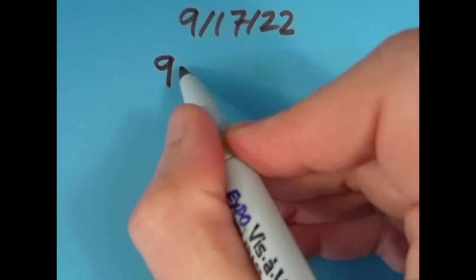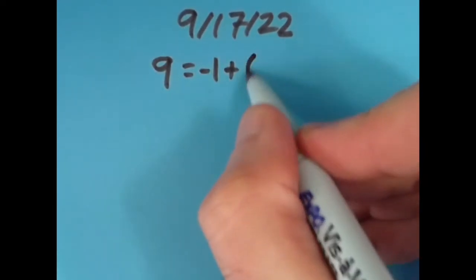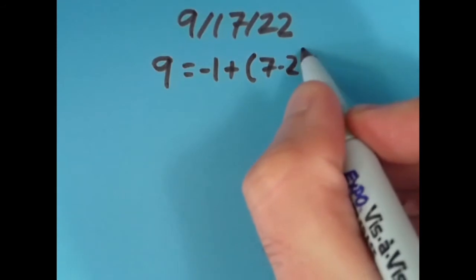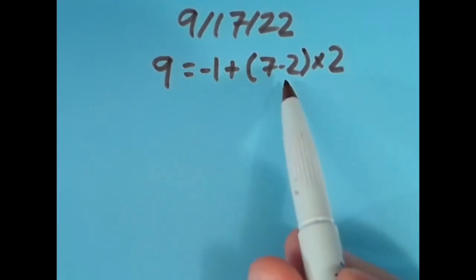What I said was that 9 equals negative 1 plus all of 7 minus 2 times 2. So 7 minus 2 is 5, we do that first because it's in our parentheses, then we do our multiplication so we have 5 times 2 which is 10, and lastly we're going to add, so we'll do negative 1 plus 10 which is positive 9.